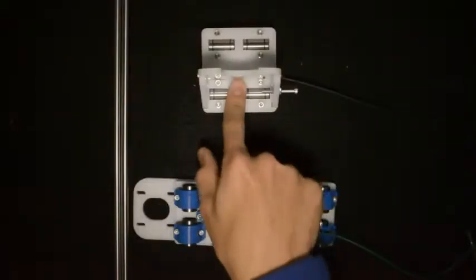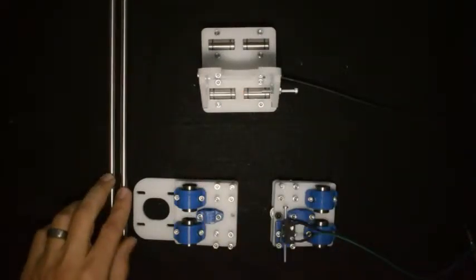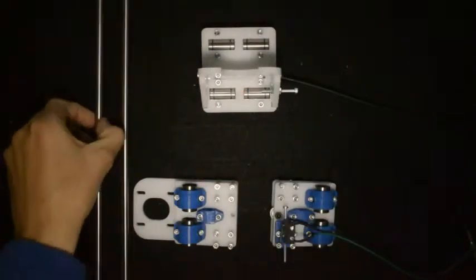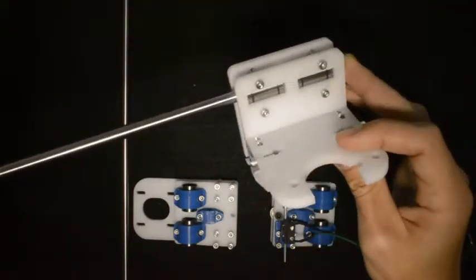For the next step, we'll need the X-carriage that we assembled previously, as well as two linear rods. First, we'll take the rods and assemble them through the linear bearings of the X-carriage.